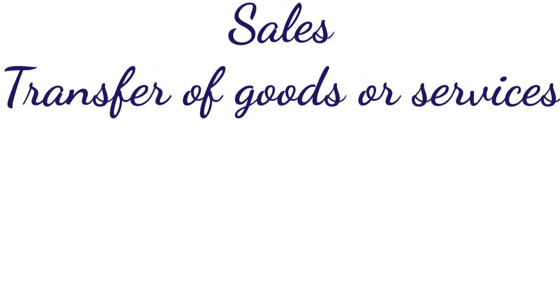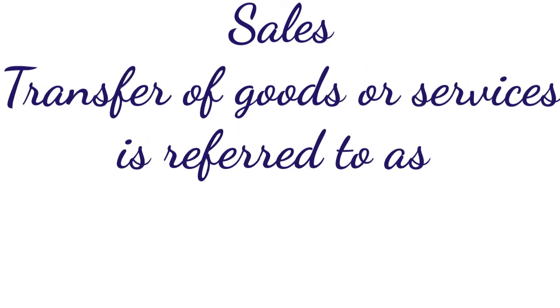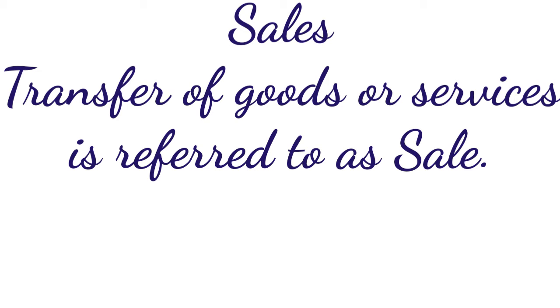Next we have Sales. Transfer of goods or services is referred to as sell. If a furniture dealer sells 5 almirahs to his customers, it will be considered as sell. But if a bookseller sells old furniture to a third party, it will not be considered as sell. It is because the bookseller is involved in the book business — purchase and sale of furniture is not coming under his normal business activities. On sale, the title in the goods passes to the buyer. Therefore, transfer of title is the evidence of sale.